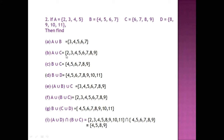A union C: similarly we will merge the elements of set A with elements of set C without repetition. If we see the last one, we have to calculate A union D first, then take the intersection with B union C.